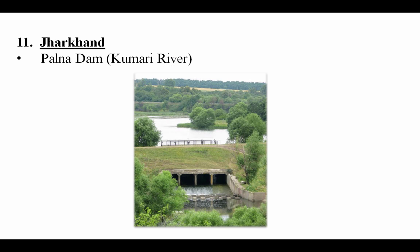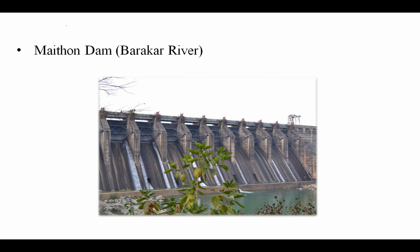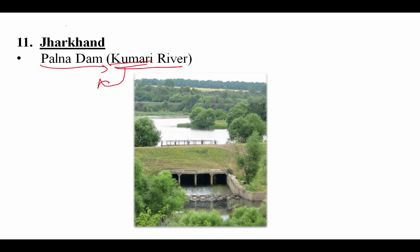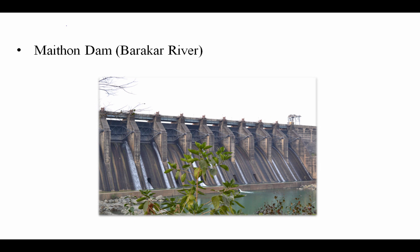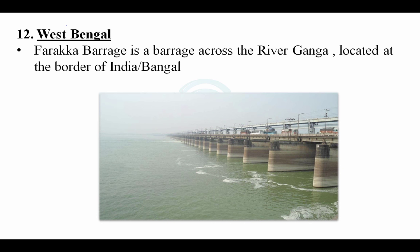From Jharkhand, remember two dams: Palla Dam on the Kumari river, and Methun Dam. From West Bengal, the most famous name is Farakka Barrage — a barrage across the Ganga river, located at the India-Bangladesh border. Students often confuse this with Odisha, but Farakka Barrage belongs to West Bengal.